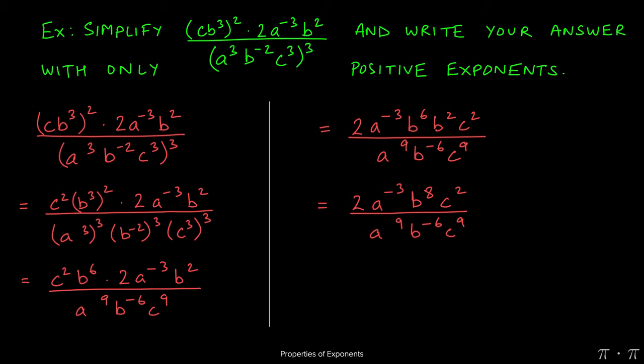Two divided by the one would just be two. For a's, since we're dividing and the bases are same, we'll do top power minus bottom power. The same thing for the b and the same thing for the c's. So we get a raised to the negative three minus nine, b raised to the eight minus negative six, c raised to the two minus nine.